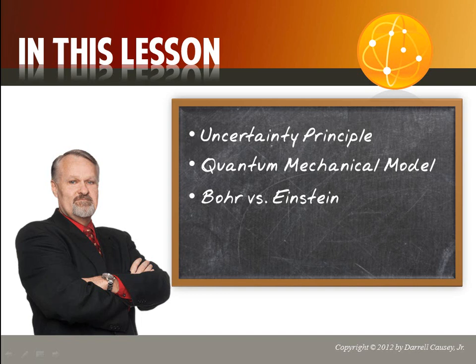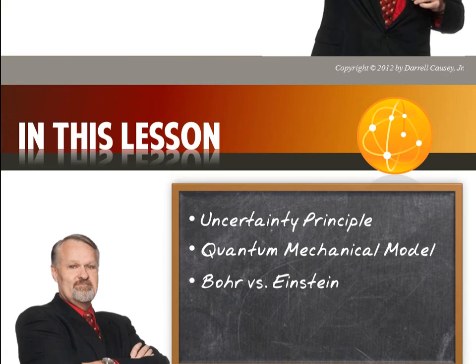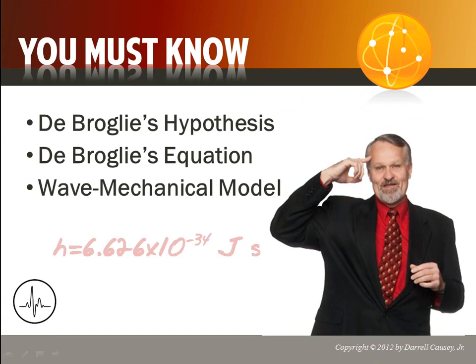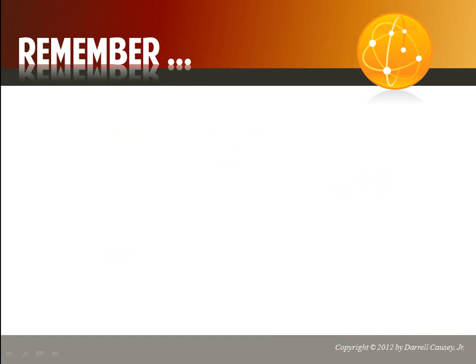That's right, scientists do not always agree on everything and we need to be aware of that. In this lesson you must know de Broglie's hypothesis, de Broglie's equation, and the wave mechanical model. You also need to learn and memorize Planck's constant and the speed of light — two things you really need to know for working out frequency equations and things like that.